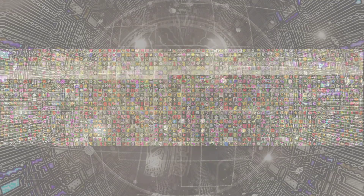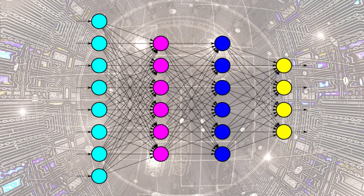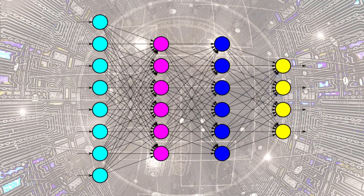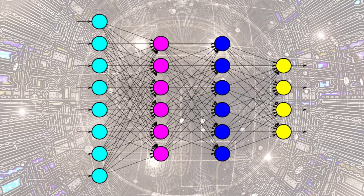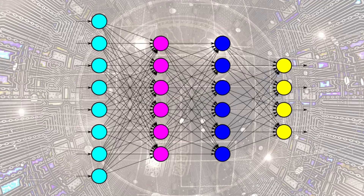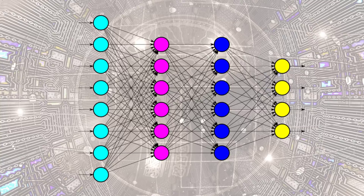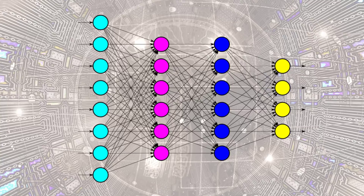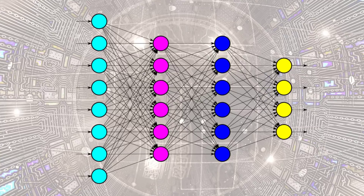Let's turn our attention now to neural networks and see why GPUs are so heavily used in deep learning. We have just seen that GPUs are well-suited for parallel computing, and this fact about GPUs is why deep learning uses them.